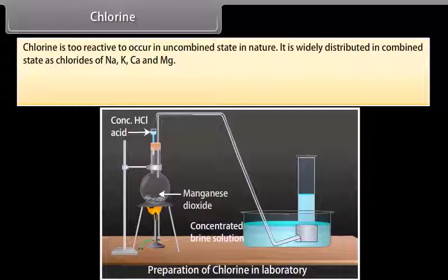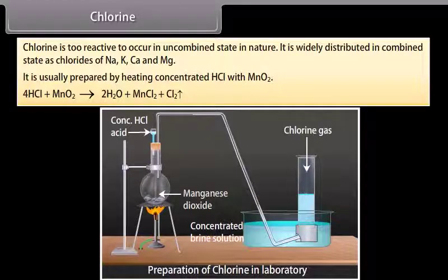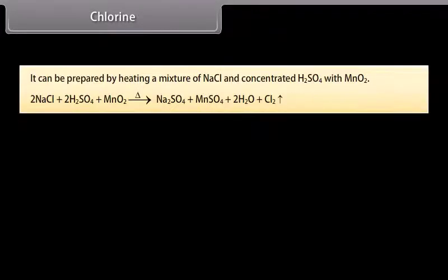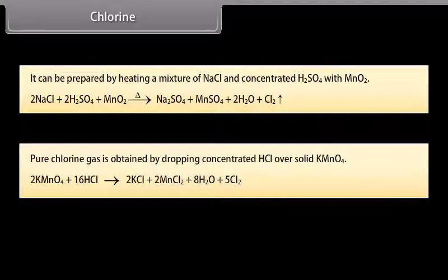Chlorine: Chlorine is too reactive to occur in the uncombined state in nature. It is widely distributed in the combined state as chlorides of Na, K, Ca and Mg. It is usually prepared by heating concentrated HCl with MnO₂, or by heating a mixture of NaCl and concentrated H₂SO₄ with MnO₂. The gas is passed through water to remove HCl and then dried by passing through concentrated H₂SO₄. Pure chlorine gas is obtained by dropping concentrated HCl over solid KMnO₄.